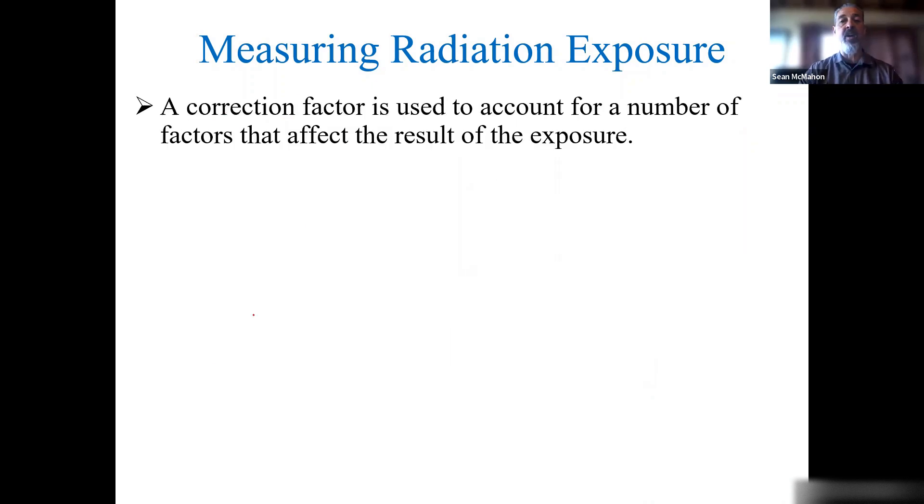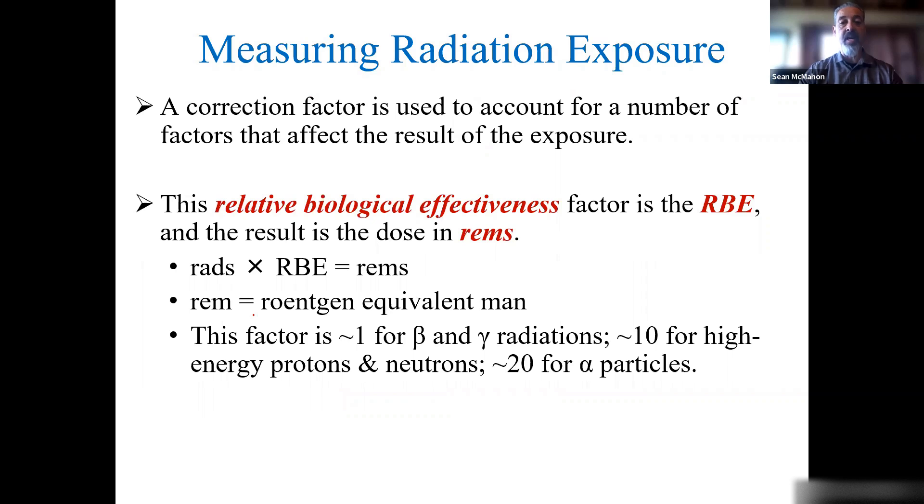A correction factor is used to account for factors that affect the result of exposure: the relative biological effectiveness factor, the RBE, and the result is the dose in REMs. This is just throwing some terms out that you may have seen. Rads times the relative biological effectiveness equals REMs. The REMs you can use as a factor of roughly one for beta and gamma radiations, roughly 10 for high energy protons and neutrons, and 20 for alpha particles. The SI unit for REM is the sievert, which is one sievert equals 100 REM.